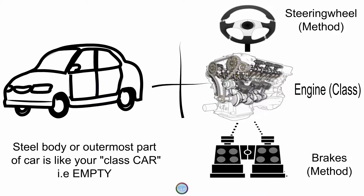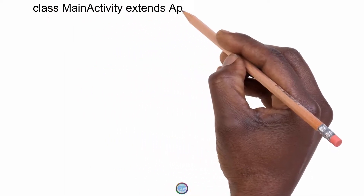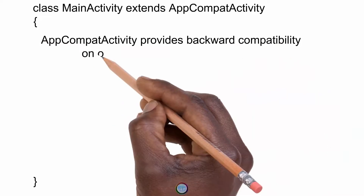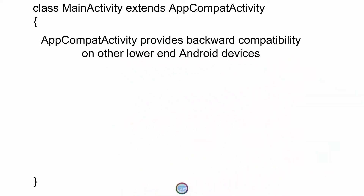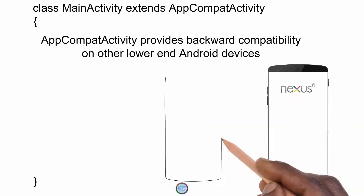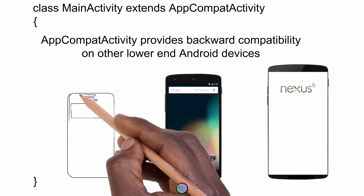I hope you would have understood what AppCompatActivity is with these simple real-life examples. Similarly, extending your MainActivity with AppCompatActivity has further advantages — AppCompatActivity also allows backward compatibility on older Android devices, meaning it allows the app to run on lower version devices as well.